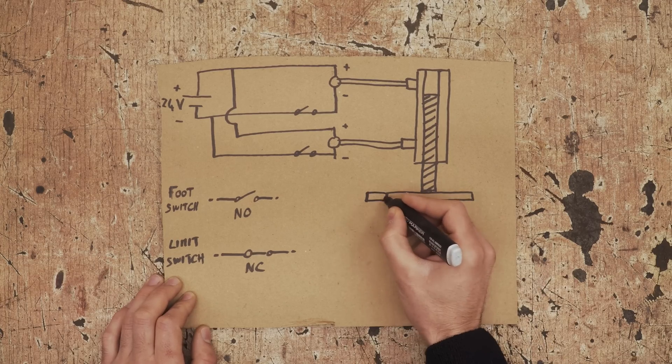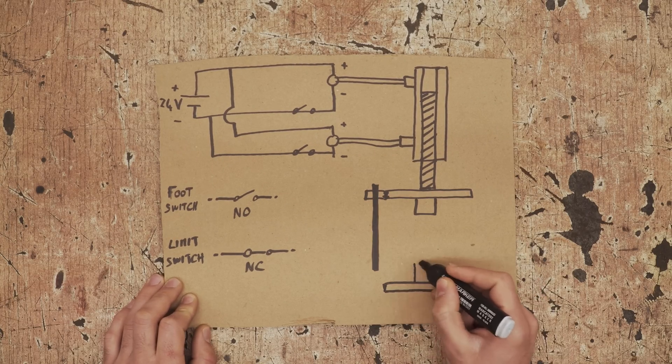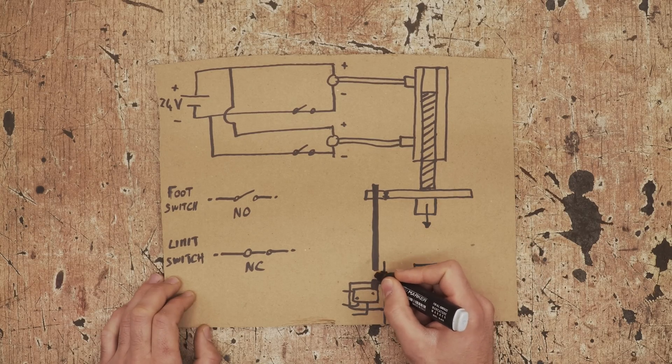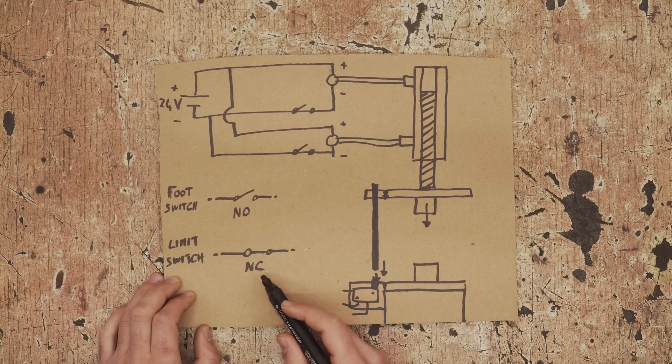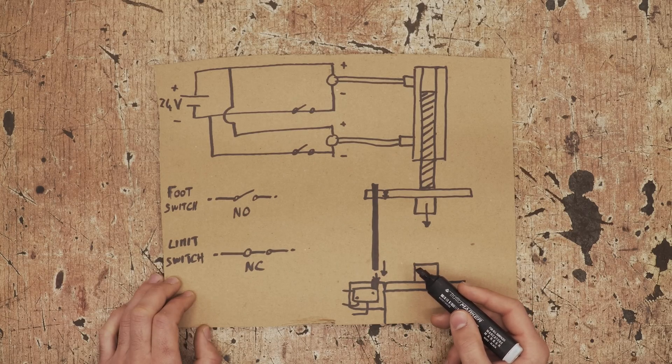What I want to make is some kind of an adjustable stop mounted here on the top plate, and on the bottom I will mount the switch. So when the piston comes down, the rod pushes the limit switch, stopping the current going into the valve, and therefore it should stop the piston as well.